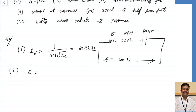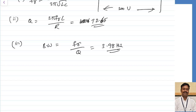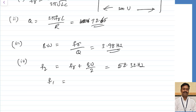Resonant frequency FR = 1/(2π√LC) = 50.33 Hz. Q factor = 2π·FR·L/R = 12.65. Bandwidth = FR/Q = 3.98 Hz. Upper cutoff frequency F2 = FR + BW/2 = 52.32 Hz. Lower cutoff frequency F1 = FR − BW/2 = 48.34 Hz.